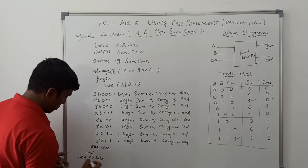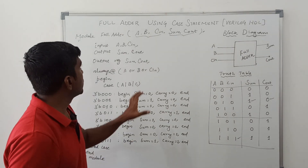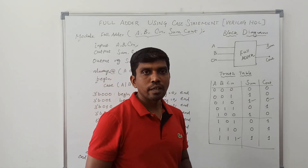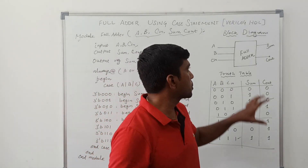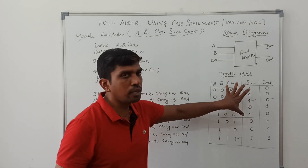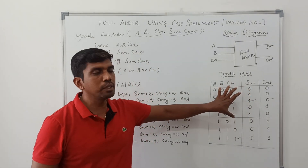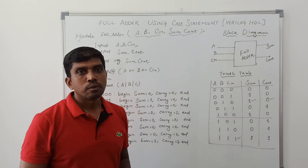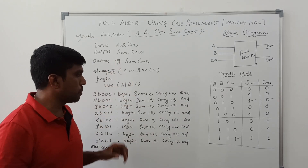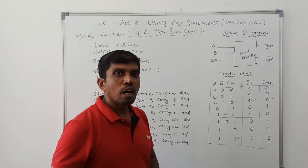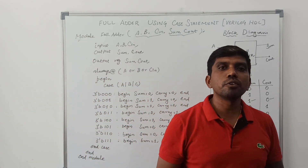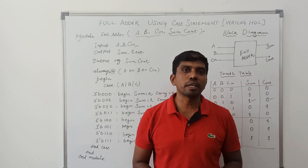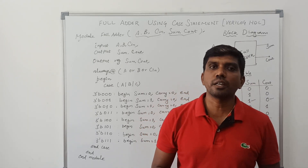This is the simple program for a full adder circuit using the case statement. First you draw the block diagram, then the corresponding truth table — using these two things you can write the program following these simple steps. I hope you understand the concept well. If you are watching for the first time, please subscribe and support us to make more videos. Thank you.